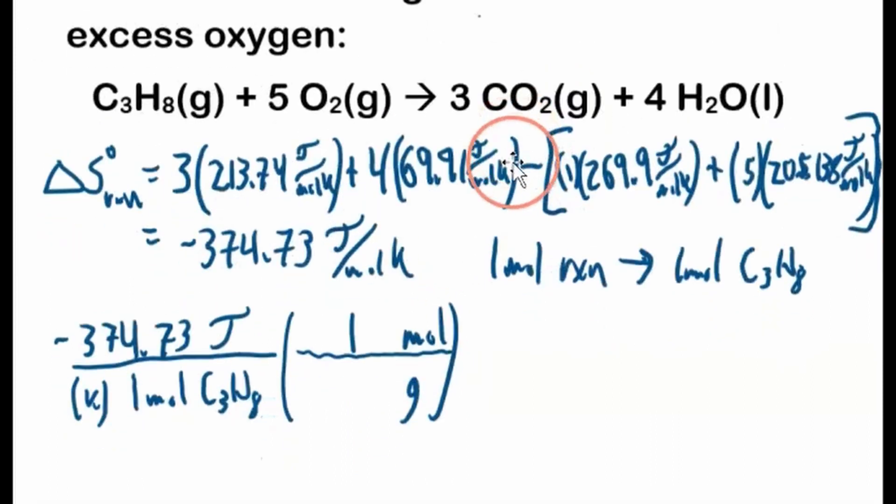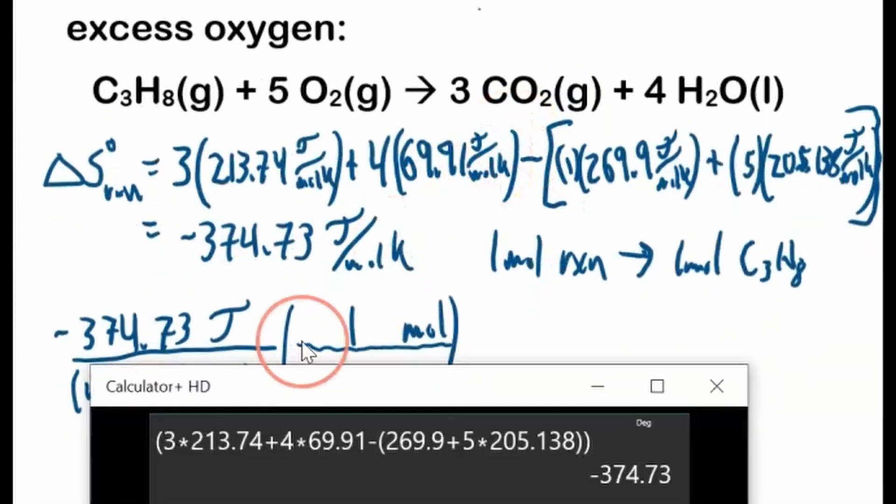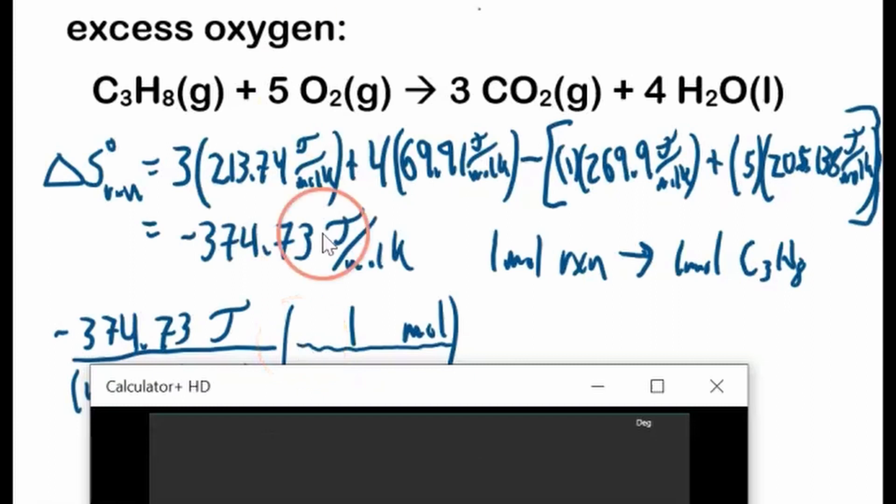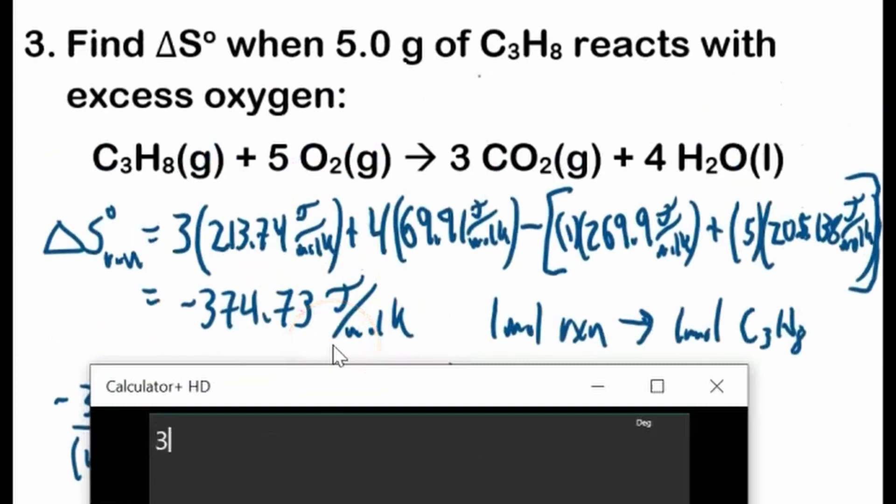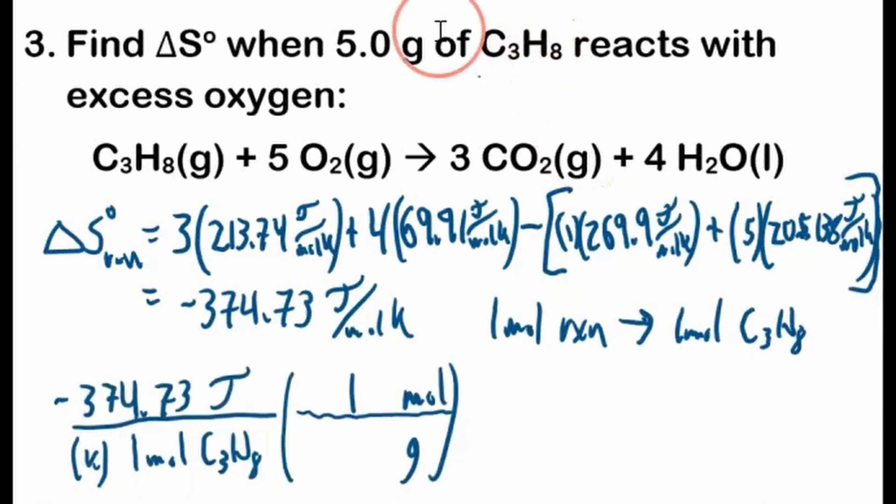And for every 1 mole, C3H8 is, let's calculate that, so there's, based on the periodic table, the molar mass of carbon is 12.011, molar mass of hydrogen, there's 8 of them, is 1.008, but 8's good, 44.097. So 1 mole weighs 44.097 grams.